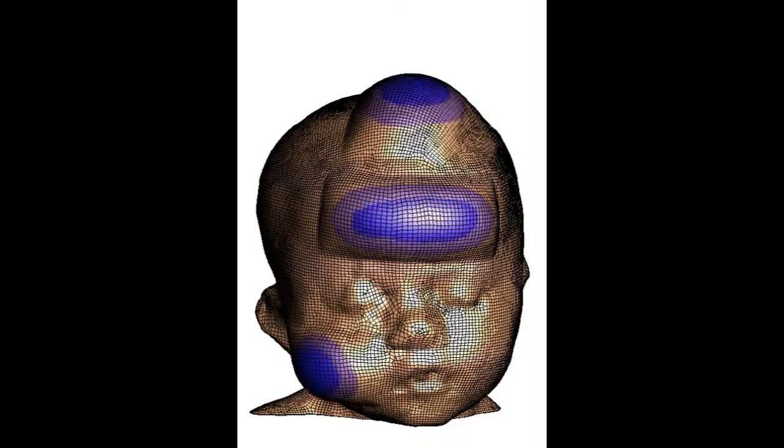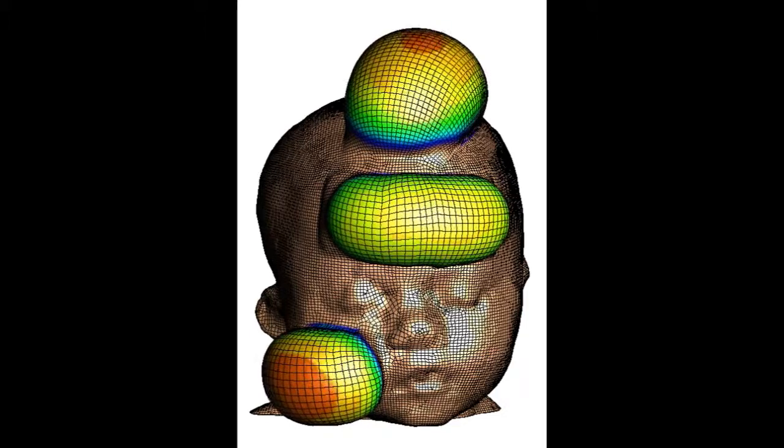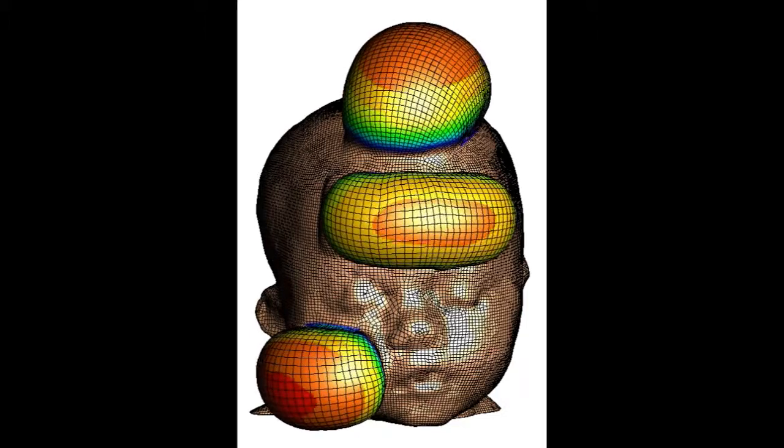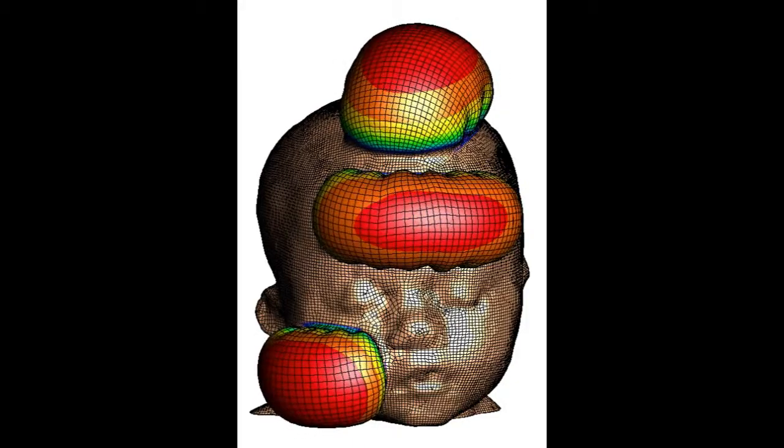Here we have the results of such a simulation. You can see three expanders implanted in the patient, one in the forehead, one in the scalp, and one in the cheek. And you can see the color coding, which means whether you have a red color, that means that you have a lot of skin growth at that position, and blue and green are less skin growth.